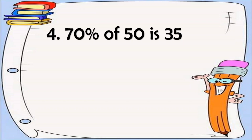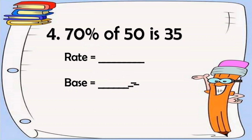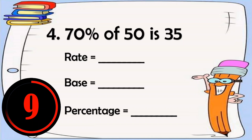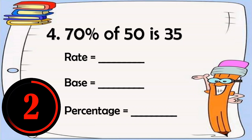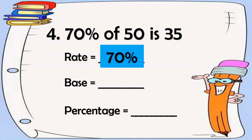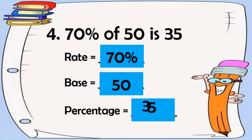70% of 50 is 35. What is our rate, base, and percentage? The answer is: 70% is our rate, 50 is the base, and 35 is the percentage.